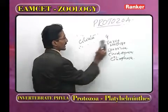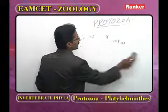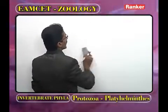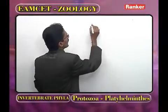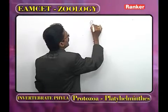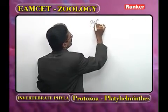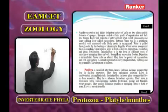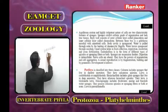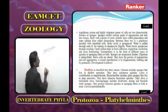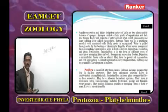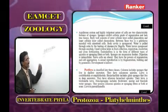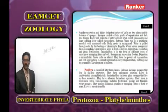Now we discuss the second phylum — Porifera. The kingdom Animalia is classified into two sub-kingdoms. The first sub-kingdom is Parazoa.